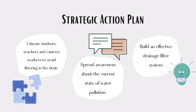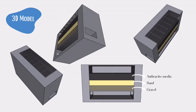Our main strategy is to build an effective drainage filter system at the drain around the school compound. This is our design for the drainage filter system. This system consists of three layers. The first and second layers are the anthracite media and filtering sand, which function to suspend particles to be retained in the depth of the filtering bed. This allows a higher flow, less pressure drop, and a faster backwash. The last layer is the gravel that will filter sand on the upper layer so the small particles of sand will not flow together with the water.